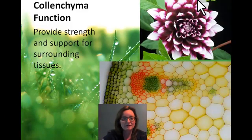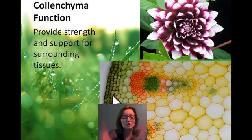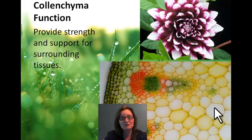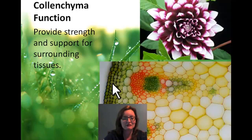Colenchyma also provides support for surrounding tissues. For example, a dahlia has a ginormous, very heavy flower with lots of petals, and that takes support to hold up. If we look at the colenchyma in the dahlia stem, we can see that the thick, uneven cell walls are helping provide more support to keep the flower and stem standing straight up.